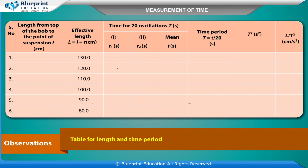Table for length and time period. Length from top of the bob to the point of suspension (L cm); Effective length L_eff = L + R (cm). Readings: 1→130, 2→120, 3→110, 4→100, 5→90, 6→80. Time for 20 oscillations: T₁ seconds, T₂ seconds; Mean T seconds. Time period T = Mean T / 20 seconds. T² (s²). L/T² (cm/s²).